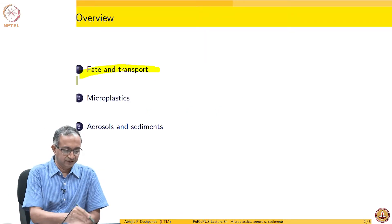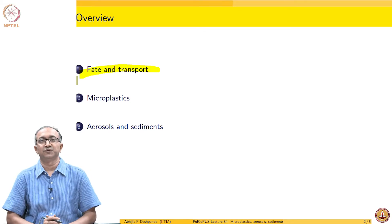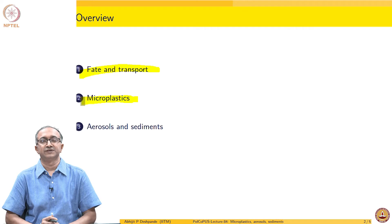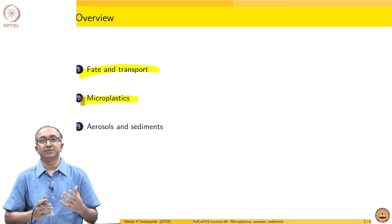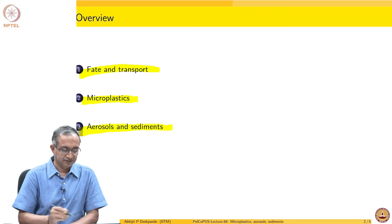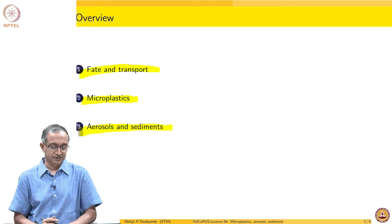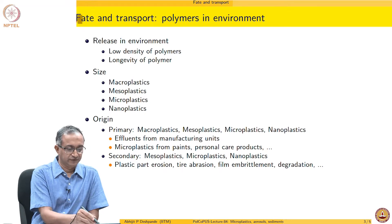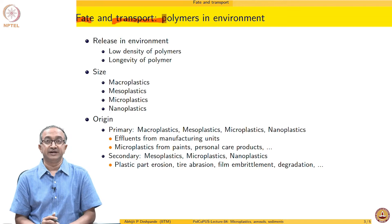We will look at the fate and transport, which we have already summarized before, and see how and why polymers migrate to different parts of the environment. Then specifically, we will look at smaller fragments of polymers. Over the last decade or so, there is an increasing realization that a plastic bottle, when disposed, impacts the environment in multiple ways. In addition to the bottle itself being there, there are other processes which lead to formation of microplastics and subsequent impacts.